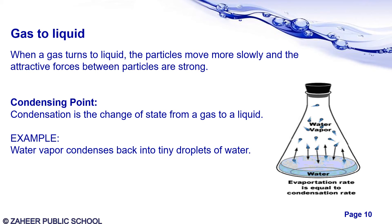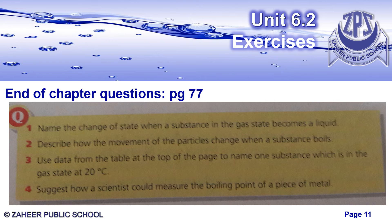The conversion of gas to liquid: when gas turns back to liquid, the particles move more slowly and the attractive forces between them become strong. This is condensation, which is the change of state from gas to liquid. You can see the example of water vapor condensing back into droplets of water on cooling. On heating, water turns into gas, and the gas turns back into liquid on lowering the temperature.